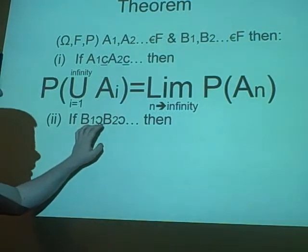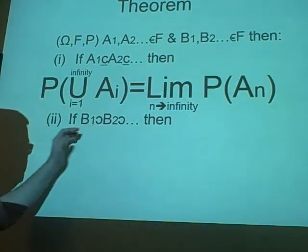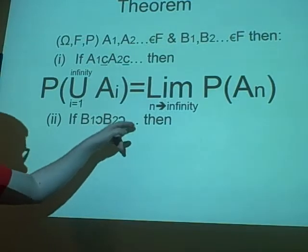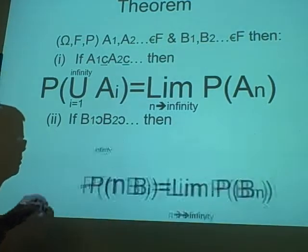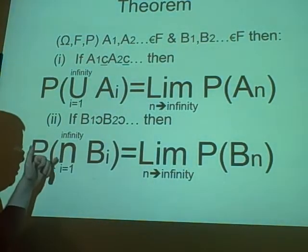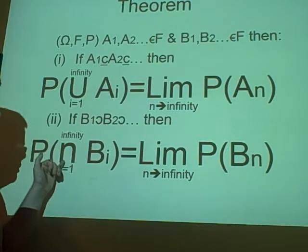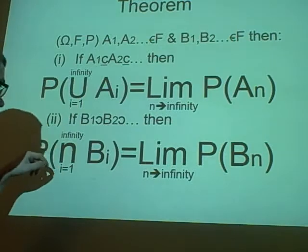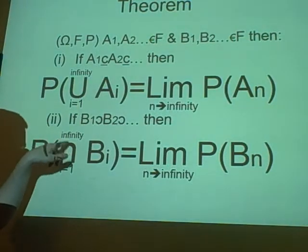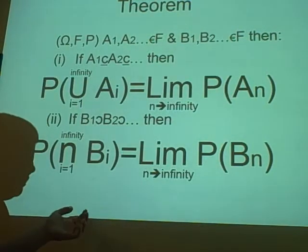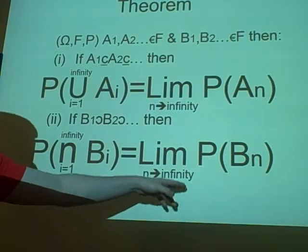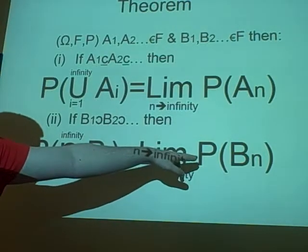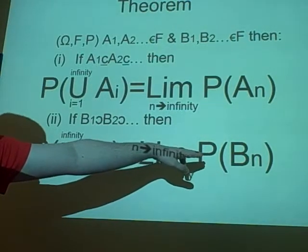Here, I've got backwards C. This means belongs. So, if B1 belongs to B2, belongs to B3, and so on, then we can say this. Probability of N, so it's like N, it's not really an N, it's the upside down U. From I is 1 to infinity of BI is the limit from N to infinity of P, probability of BN.